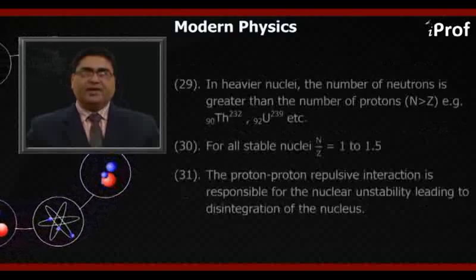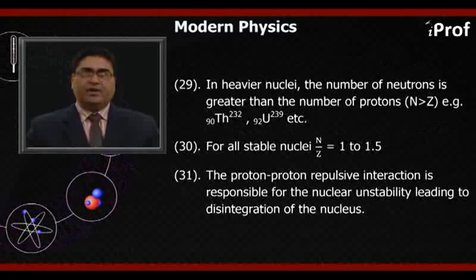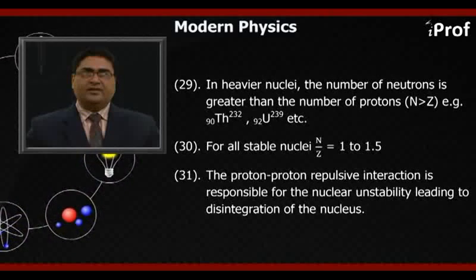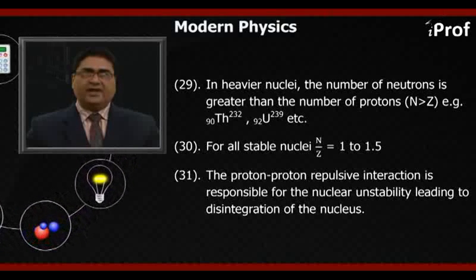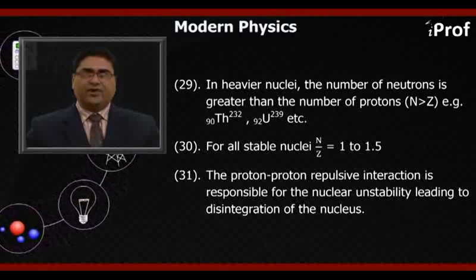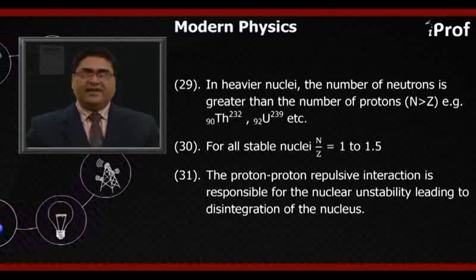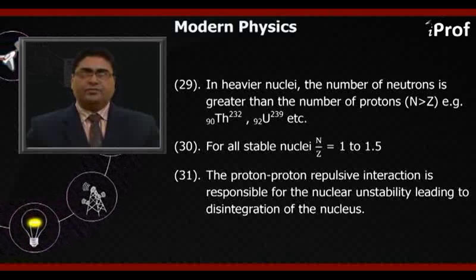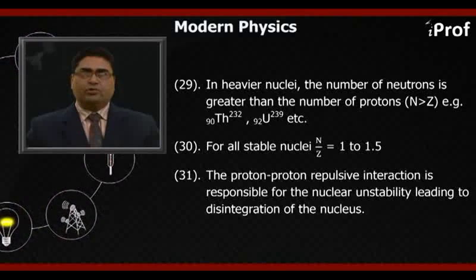Twenty-ninth, in heavier nuclei, the number of neutrons is greater than the number of protons, N greater than Z, for example ₉₀Th²³², ₉₂U²³⁹, etc.